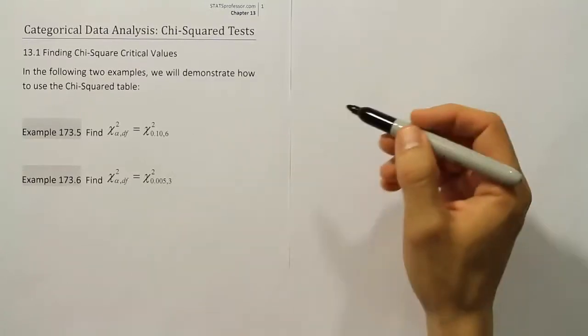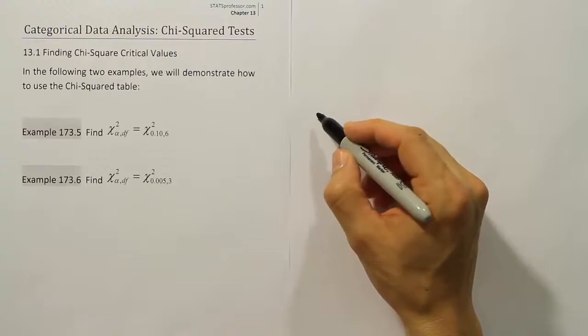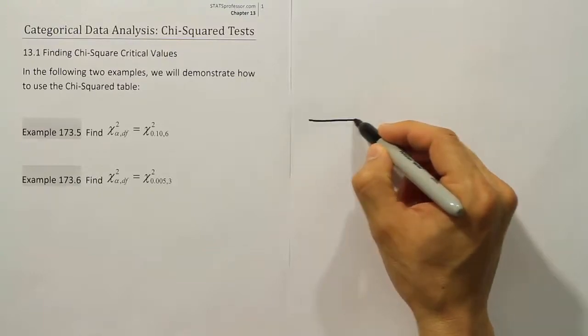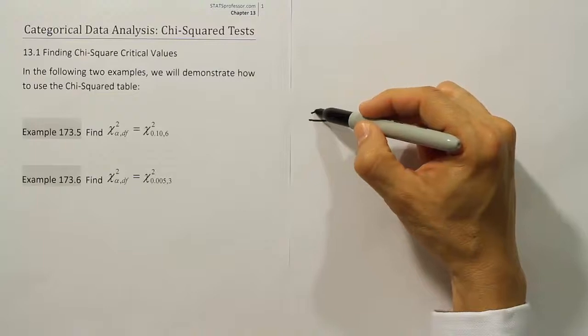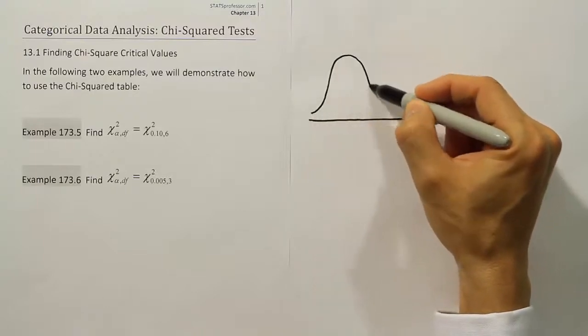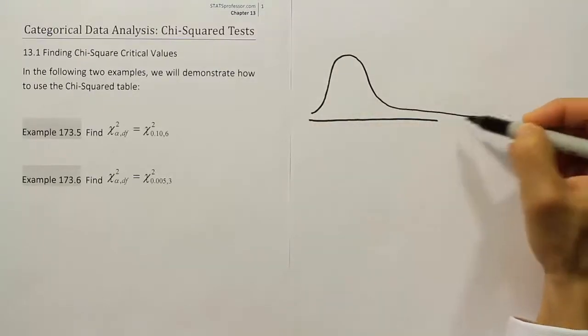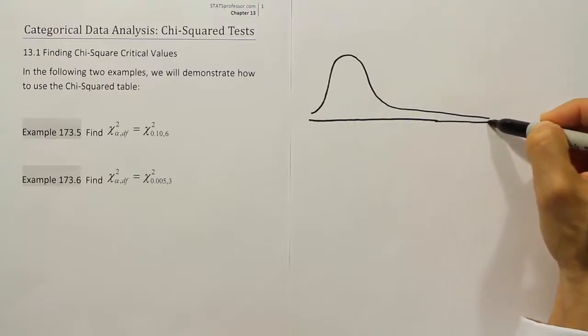I'm going to draw the curve so you can see what that looks like. A chi-squared curve kind of looks like an F-curve. It has that sort of very right-skewed look to it. So we're going to draw our right-skewed curve and call that our chi-squared curve.